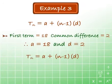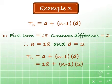And so Tn, which equals a plus n minus 1 times d, is equal to 18 plus n minus 1 times 2, which is equal to 18 plus 2n minus 2, which equals 16 plus 2n.